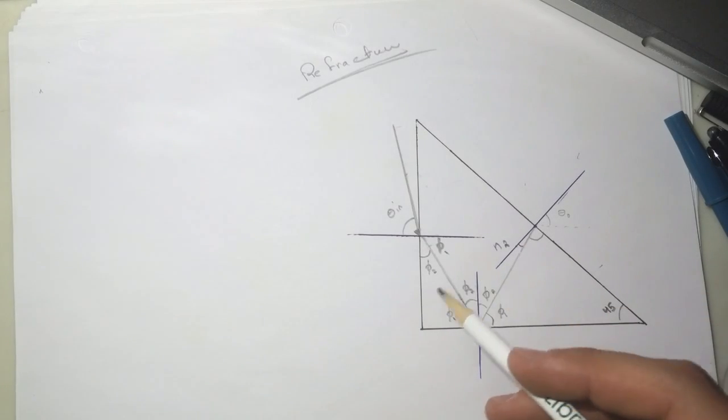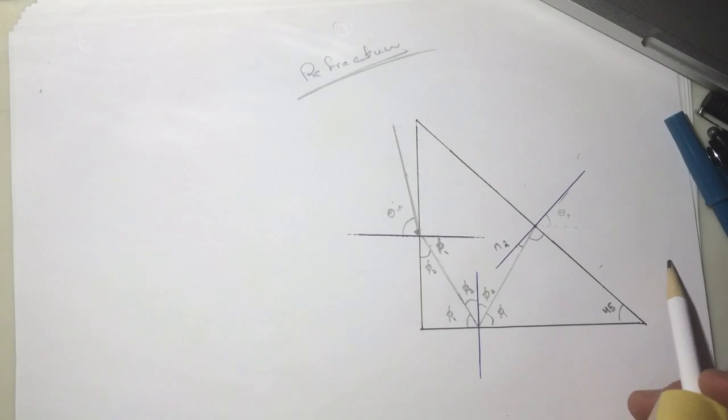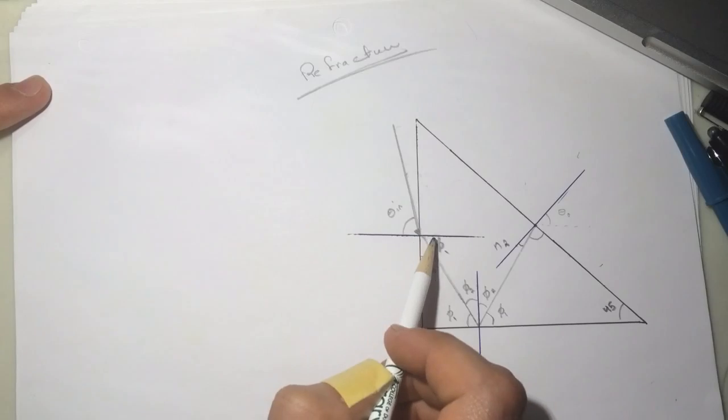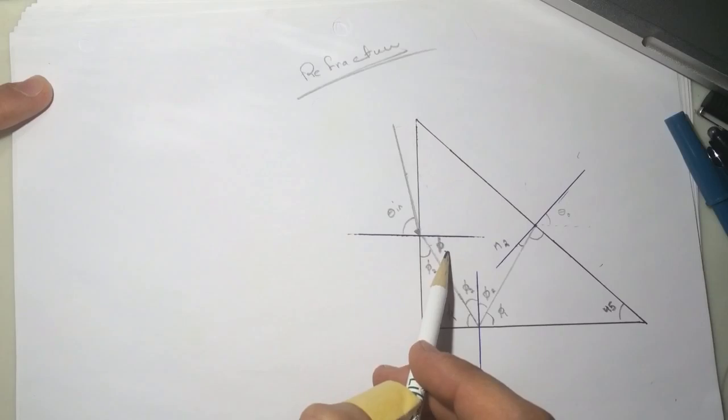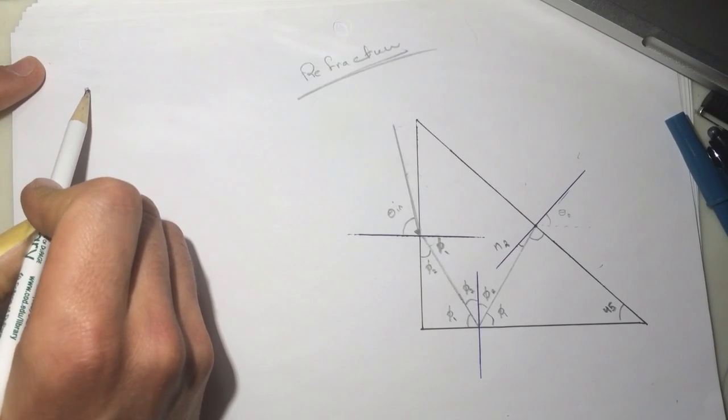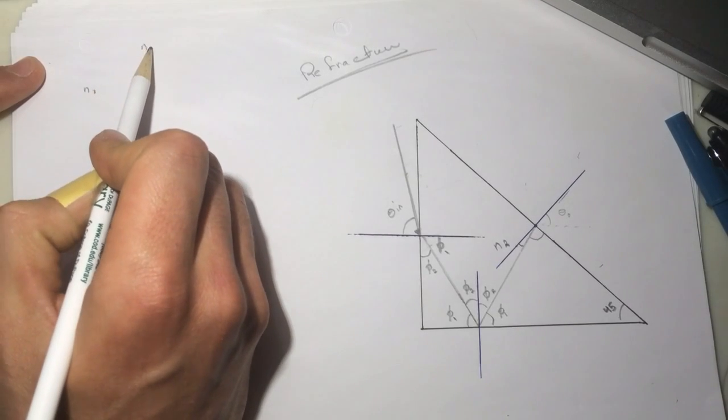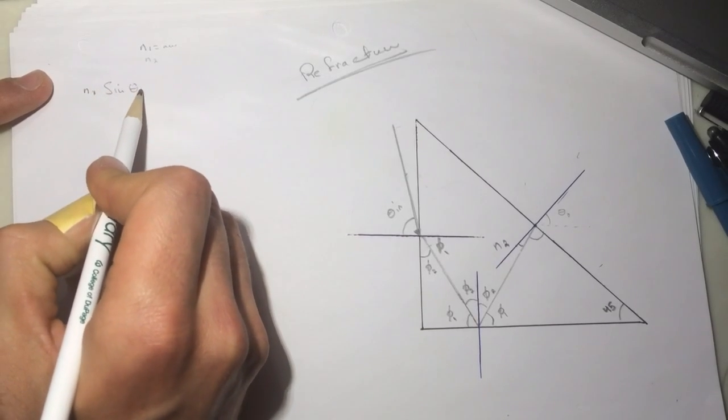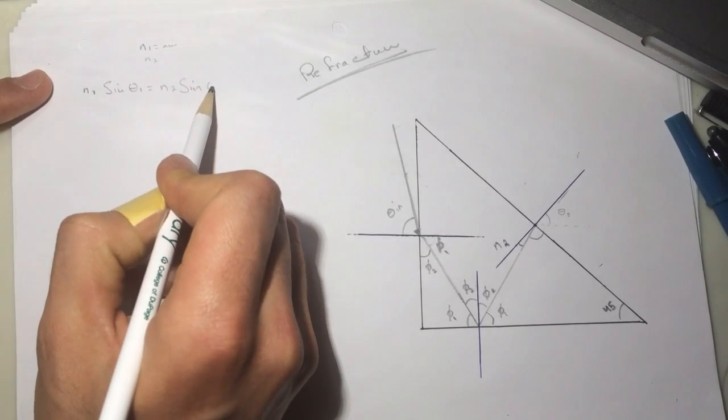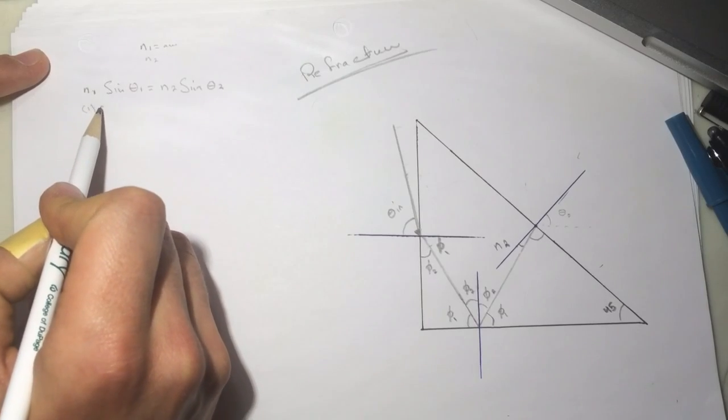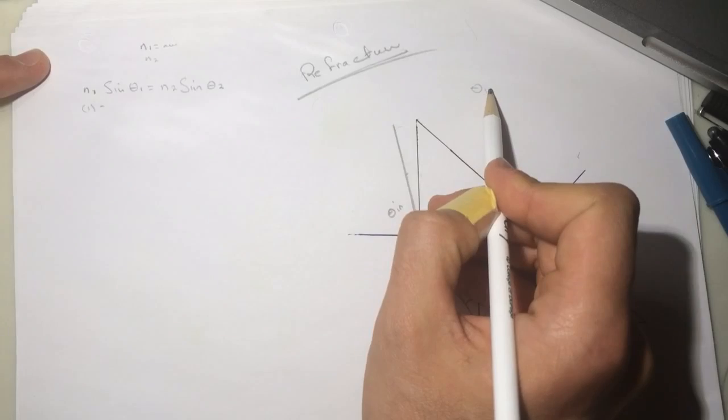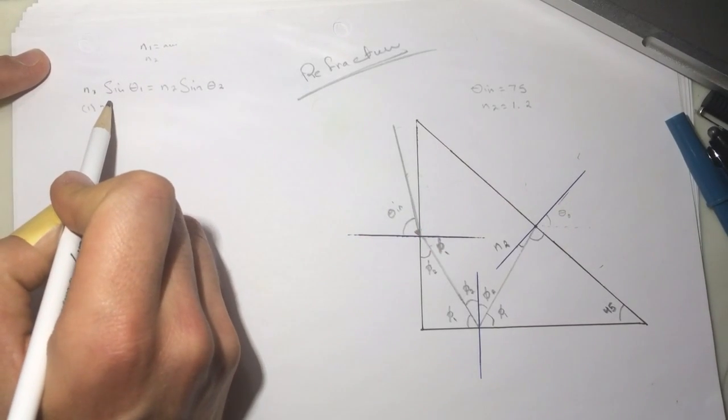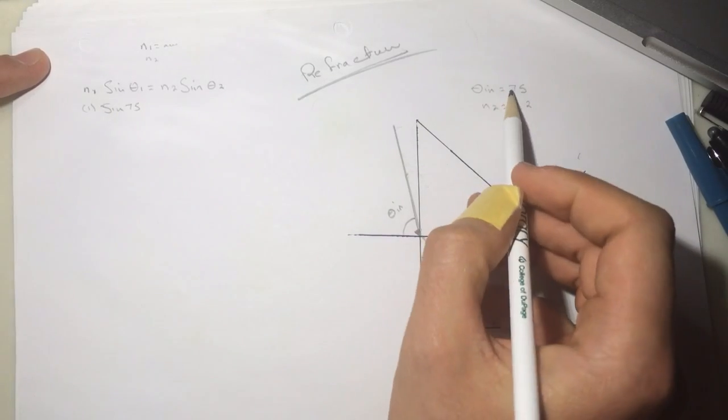I kind of prepared everything here to not confuse myself. So let's start. They gave us the theta in here, so let's find theta out. I'll call this phi here. So n1 will be the one for the air and n2 will be for this material. n1 sine of theta 1 equals n2 sine of theta 2. So n1 is 1, theta in was 75, and n2 was 1.2.